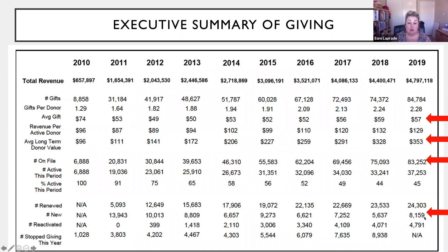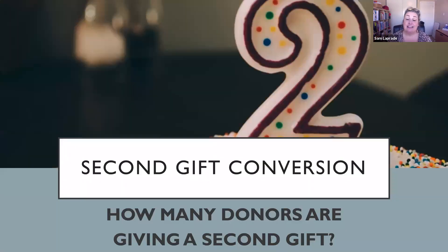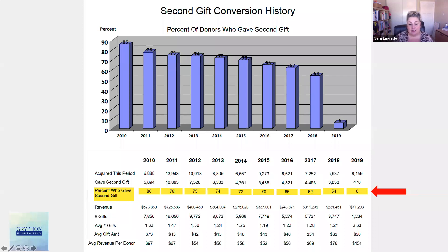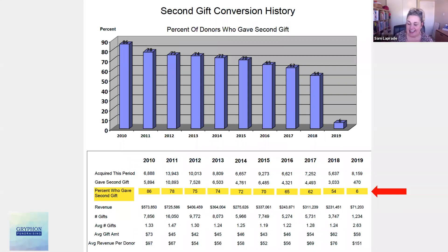I always like to see how many new donors there are, and second gift conversion — how many donors are giving that second gift. In this sample you can see 54%, 62%, and so on. Your second gift conversion rate is really telling about your stewardship and the connection donors feel with your organization. If there's one thing on your one-two-three list today that you haven't done yet, find out what your second gift conversion rate is — it's a really important metric to know.